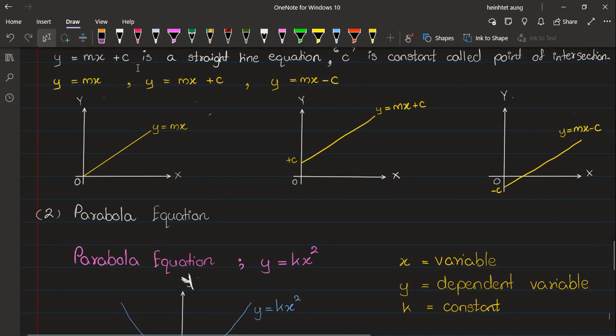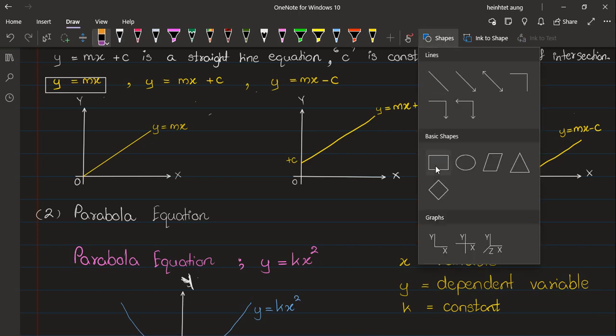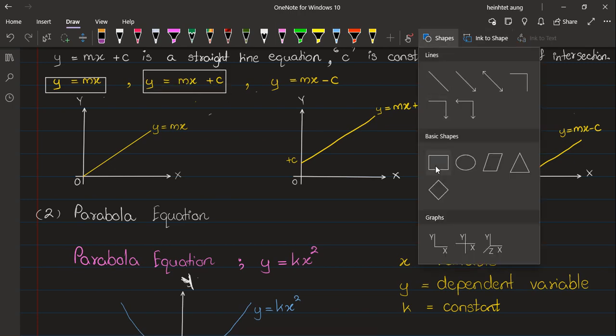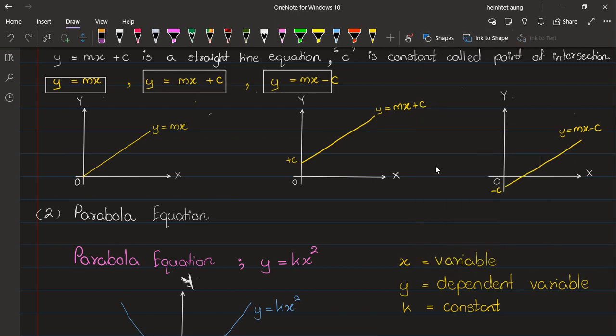The equation will be equal to zero, or the equation will be equal to mx. With the constant, this becomes mx plus c for one constant form, and mx minus c for another constant form.